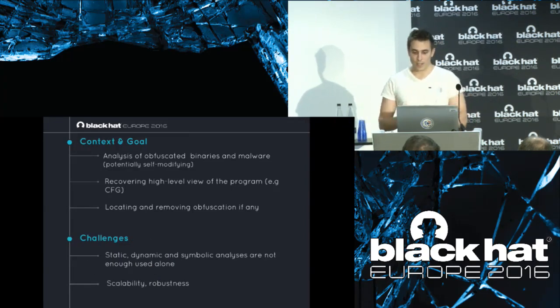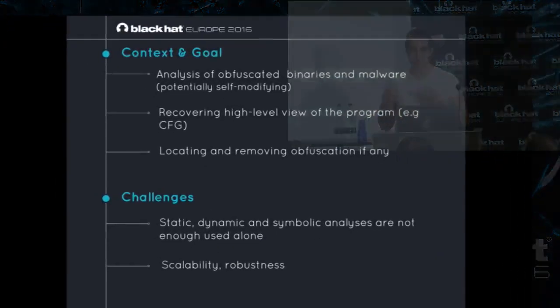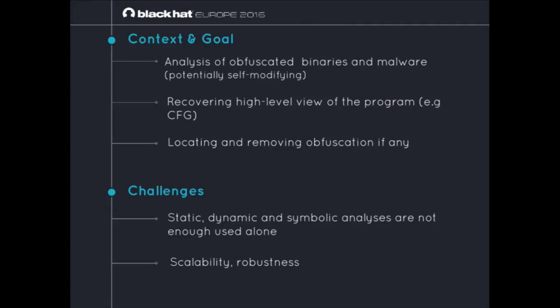What's the context? What's the goal? There is a lot of malware in the wild. Some of them are obfuscated. We'd like to address them and get rid of the obfuscation in order to perform more in-depth analysis. The first thing is trying to locate obfuscation if there is any, and in the second step, trying to remove it if possible. The goal is to recover some kind of high-level view of the program, which is usually the control flow graph.